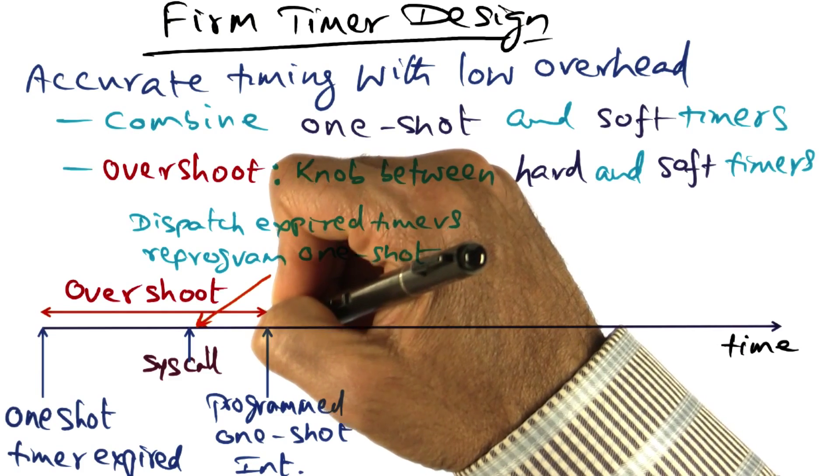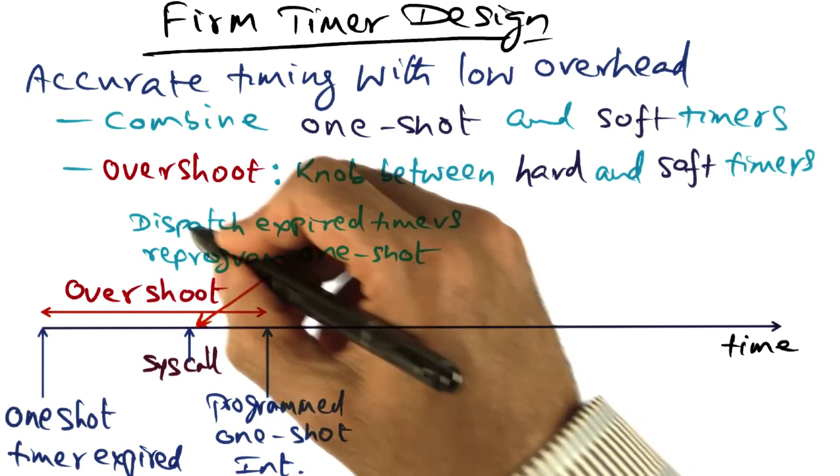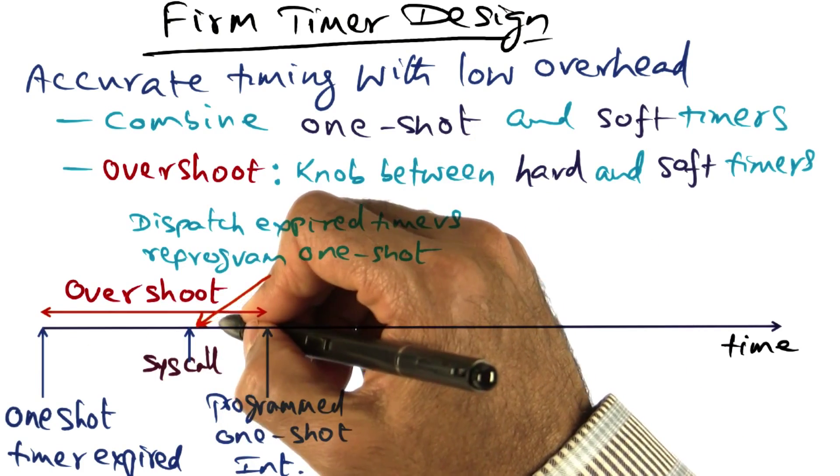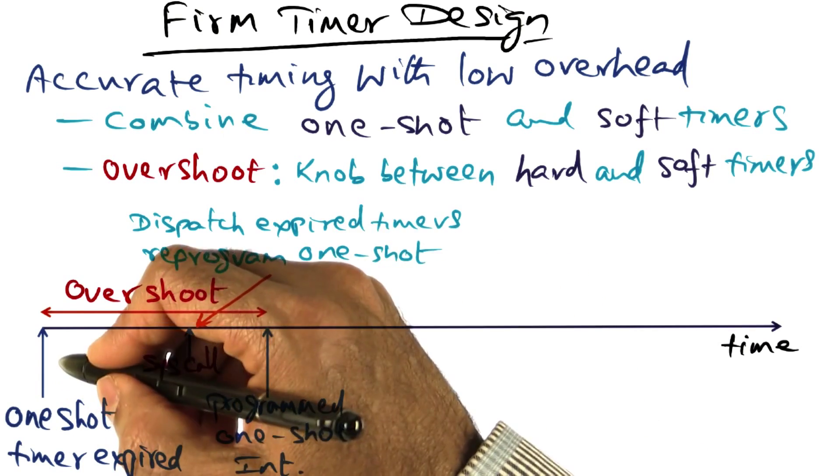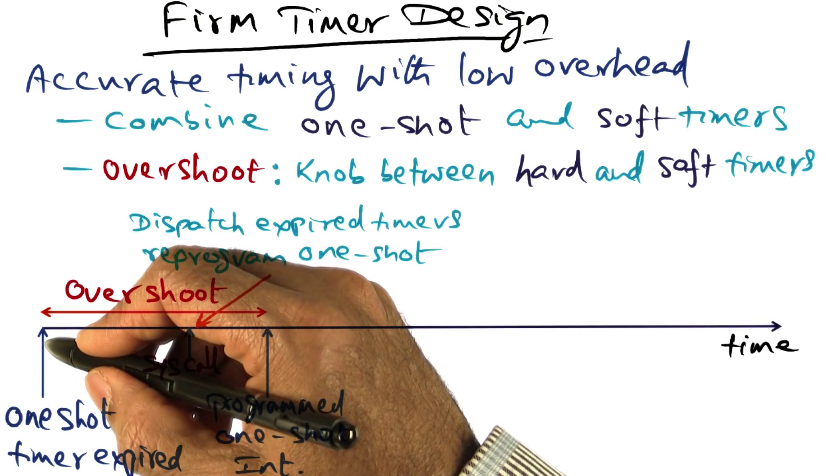It's going to interrupt me, not in the too distant future. So we'll dispatch that expired timer right now, and reprogram that one shot timer so that it is now ready for the next one shot timer interrupt.